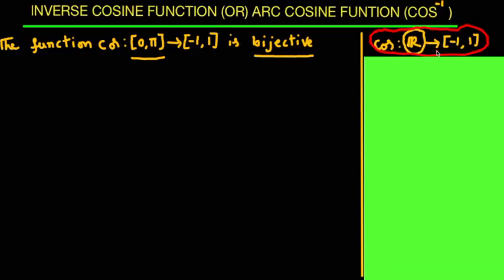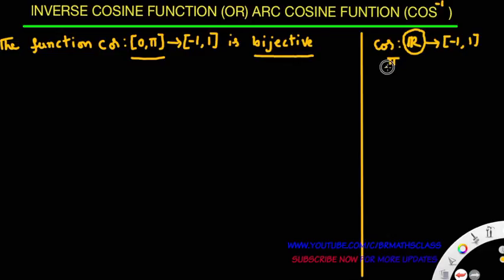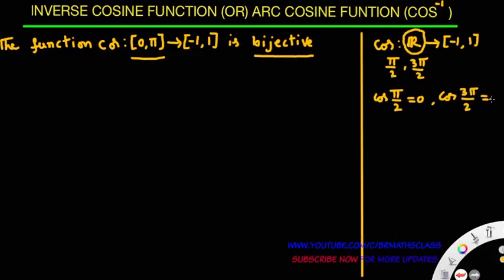If a function is bijective, then inverse exists. I'll check cos from set of all real numbers to closed interval [-1, 1] — is this function bijective or not? What is the domain here? All real numbers. I'll take two real numbers: one is π/2, another one is 3π/2. These two are different real numbers. What is cos(π/2)? From the trigonometry table, cos(π/2) is 0. What is cos(3π/2)? From the trigonometry table, cos(3π/2) is also 0, since cos of odd multiples of π/2 is 0.